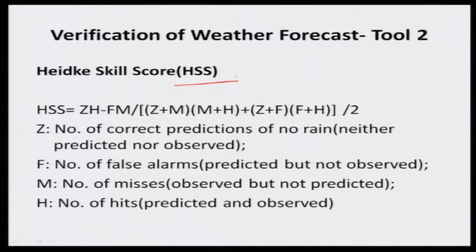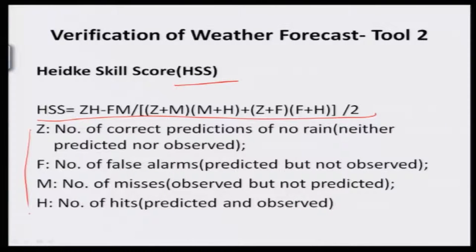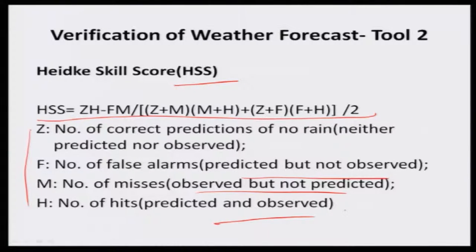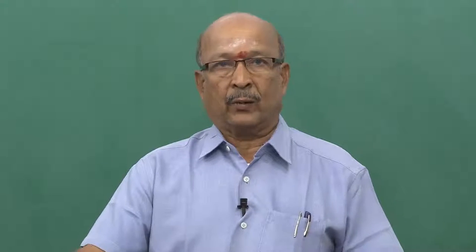This may seem cumbersome and can be confusing, but don't worry — it is a simple tool. I have given the legend here. Z equals the number of correct predictions of no rain — neither predicted nor observed. F equals false alarms, that is wrong predictions — predicted but not observed. Everything is clearly given. By using this score, you can assess the worthiness of the forecast for preparing your agro-advisories.